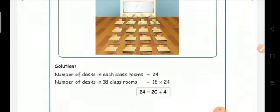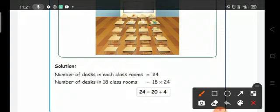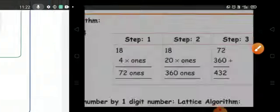See the solution. Number of desks in each classroom equals 24. Number of desks in 18 classrooms: we multiply 18 times 24. Here 24, separate that to 20 plus 4. Now multiply 18 times 20 and 18 times 4.